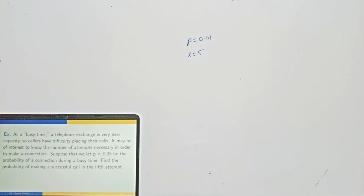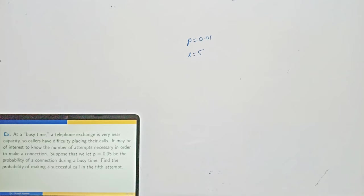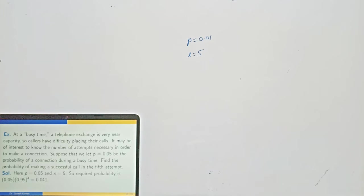Next example: At a busy time a telephone exchange is very near capacity so callers have difficulty placing their calls. Suppose P = 0.05 is the probability of a connection during a busy time. What is the probability of making a successful call in the 5th attempt? With P = 0.05 and x = 5, using the geometric distribution formula, the answer is 0.041.